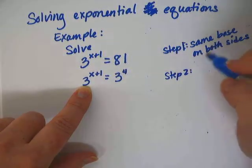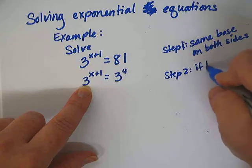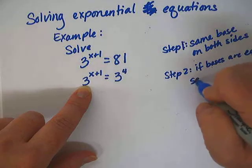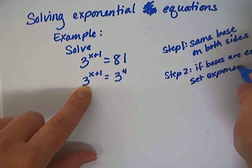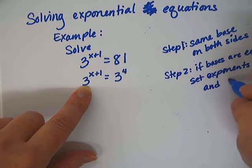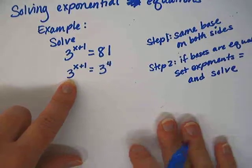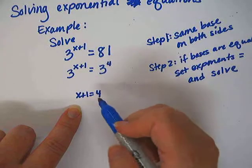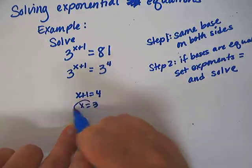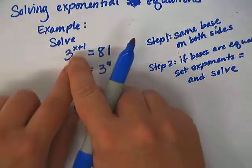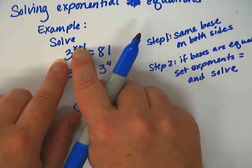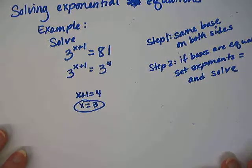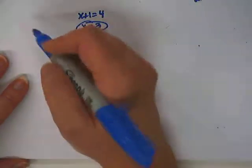Now, as long as our bases are the same, we can set the exponents equal to each other and solve. So if bases are equal, set exponents equal and solve. We're going to take this exponent and this exponent, set them equal to each other. x plus 1 equals 4. Therefore, x would equal 3. I subtract the 1 from both sides. There's my answer. Let's check our work. If we plug our x back in, 3 plus 1 is 4, and 3 to the fourth power is 81. It does work. We found the value of x.